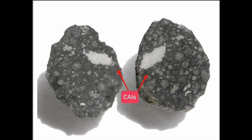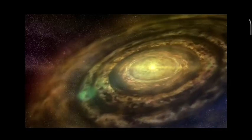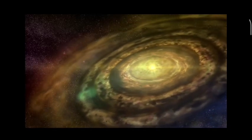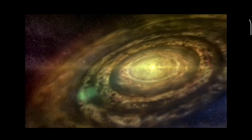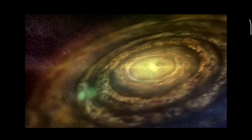Carbonaceous chondrites have unique chemical compositions containing a range of organic compounds, amino acids, and even water. They are believed to have formed in the early solar system, and their study has provided important insights into the origins of life on Earth.